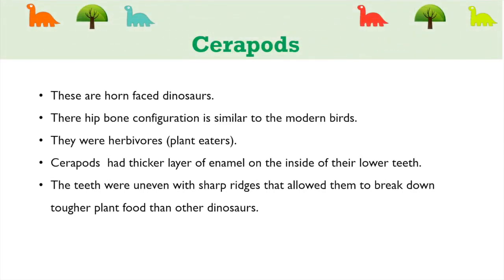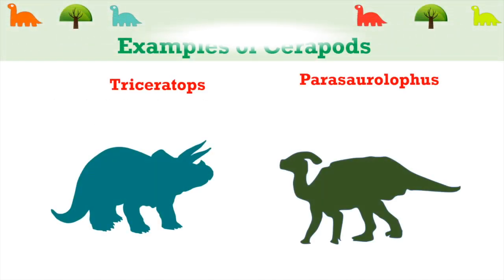Ceratopsians are the fourth subgroup — horn-faced dinosaurs. Their hip bone configuration is similar to modern birds. They were herbivorous, meaning plant eaters. Ceratopsians had a thicker layer of enamel on the inside of their lower teeth, with sharp ridges that allowed them to break down tougher plant food than other dinosaurs. Triceratops and Parasaurolophus are two dinosaurs in this group.